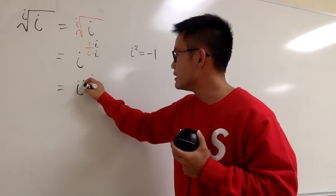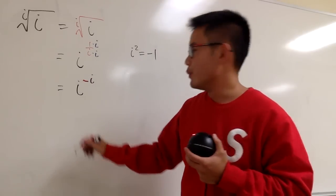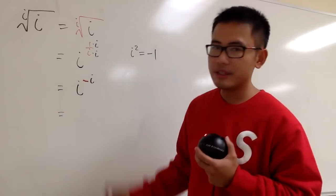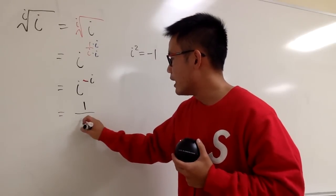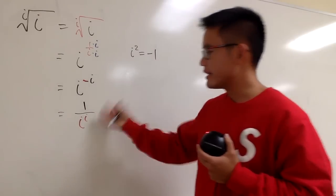And now, what can we do with this negative? The usual way, we can bring that down to the denominator and make the power positive. Namely, we can have this as 1 over i to the i, like that.